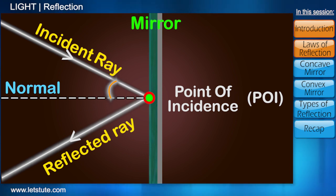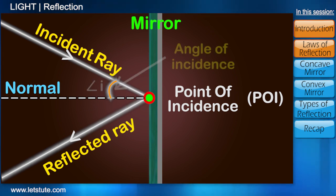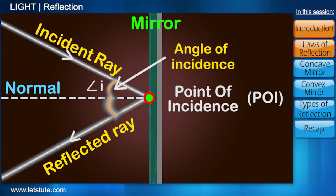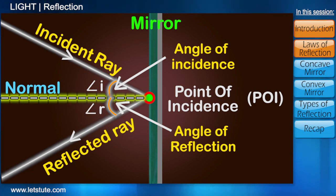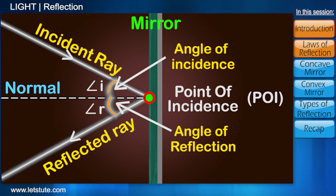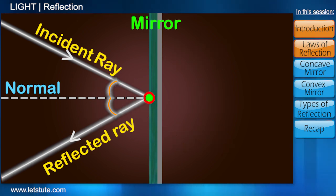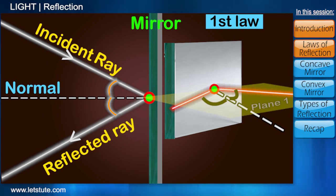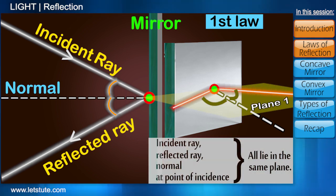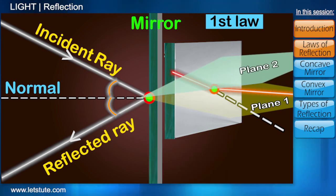The angle that the incident ray forms with the normal is called the angle of incidence, and that formed by the reflected ray with the normal is called the angle of reflection. It is to be noted that the normal has to be drawn for the angles to form. There are just two rules to reflection which we must keep in mind. The first is that the incident ray, the reflected ray, and the normal at the point of incidence lie in the same plane. This means it's not possible for the incident ray to be in one plane and the reflected ray to be in another, because it would lead to error in the formation of angles when the normal is drawn.